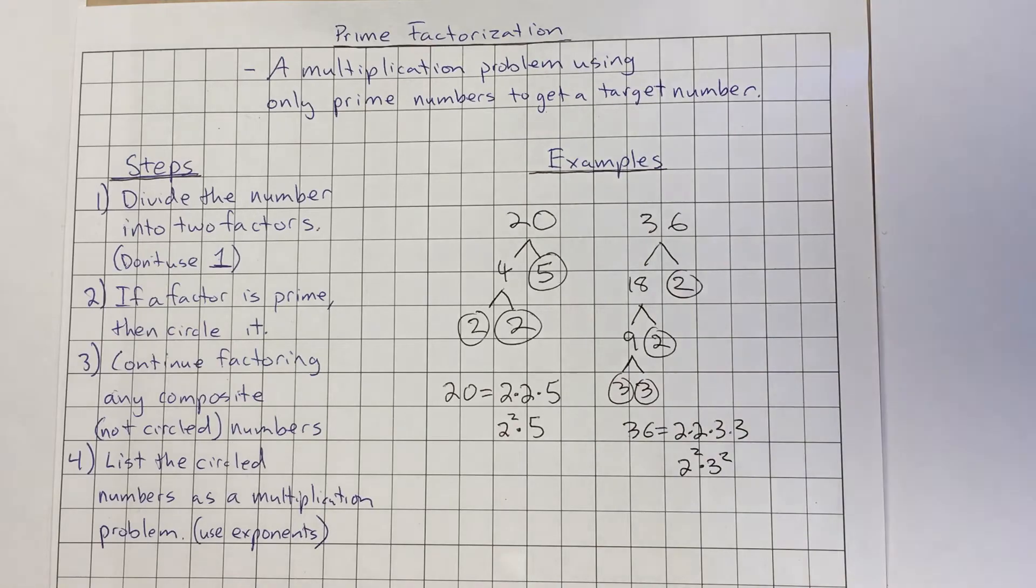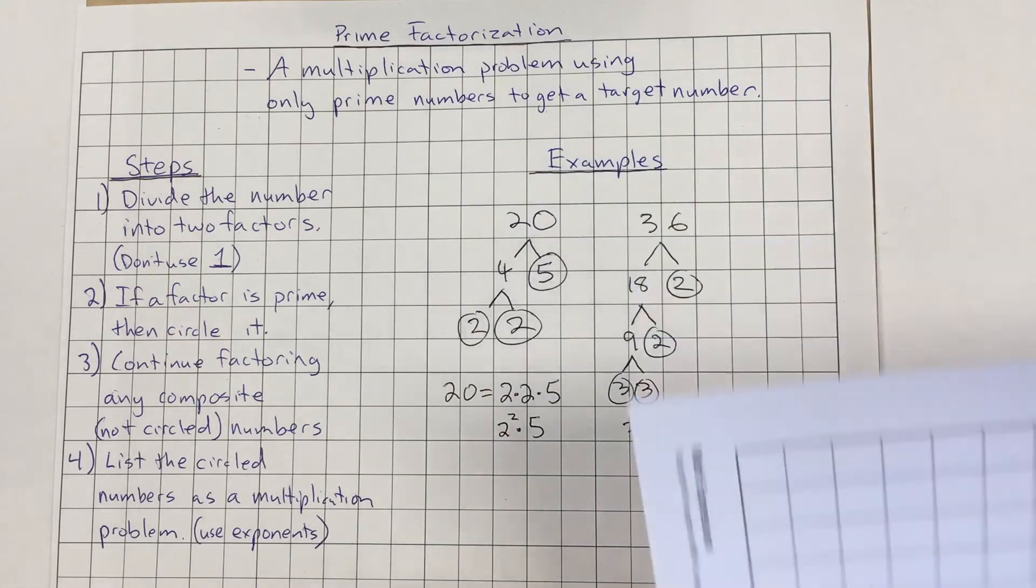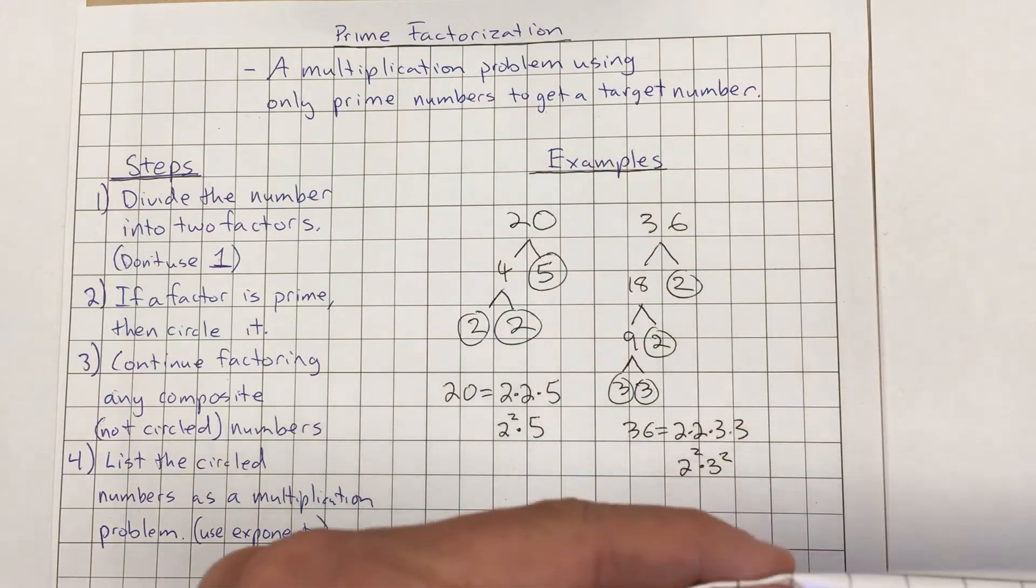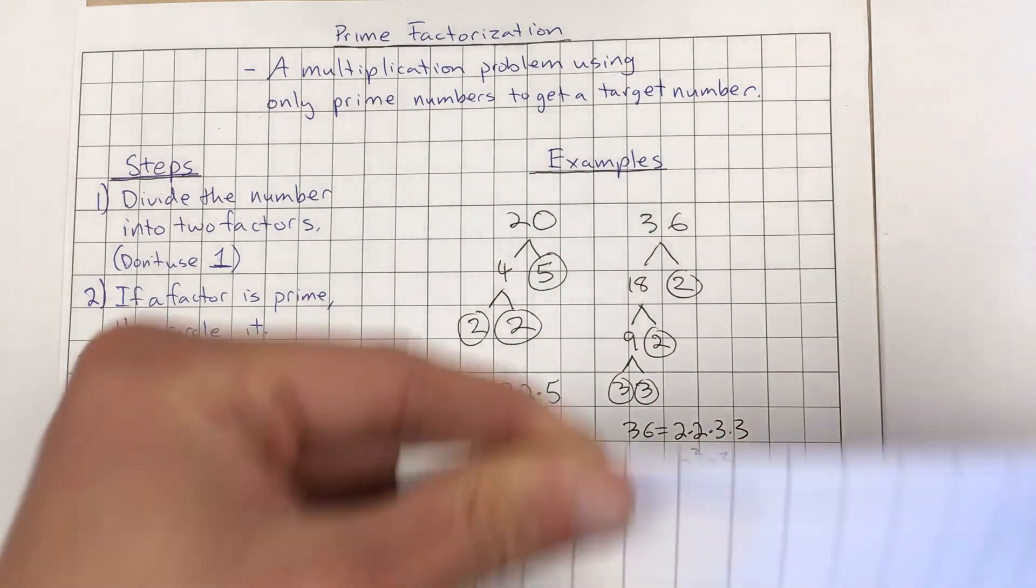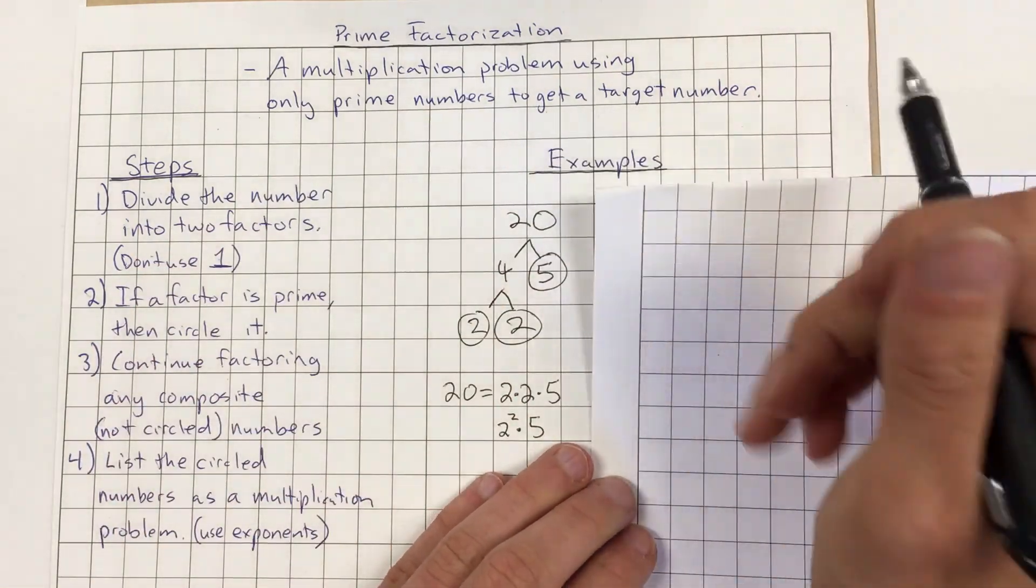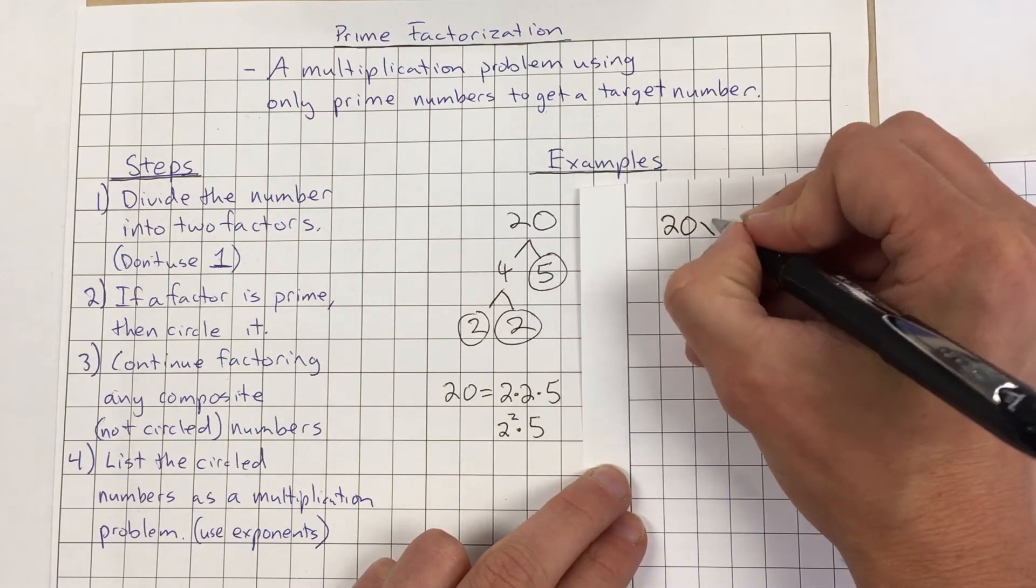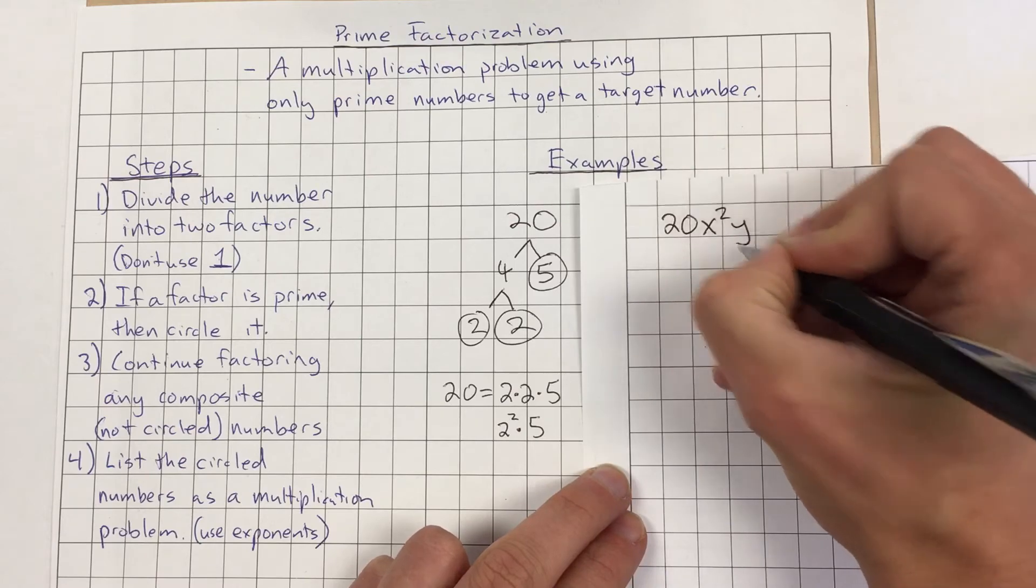Now occasionally you'll end up with, you'll be given something like a problem and it will have, let's put this right here. You might have a variable in it. So if you do end up with something that has a variable, let's say we'll use a similar number that we did before. What if we had 20x squared y?